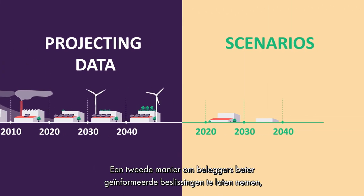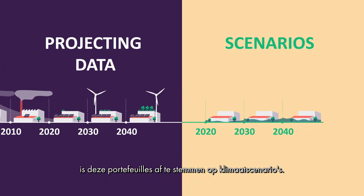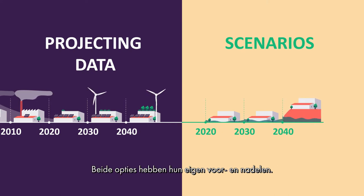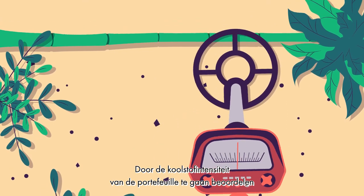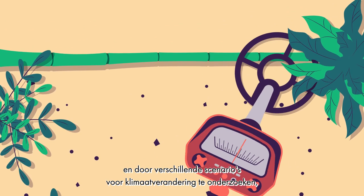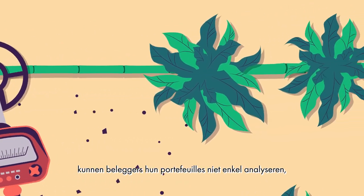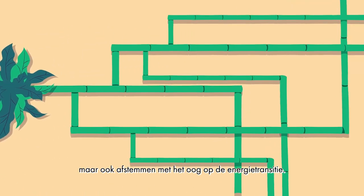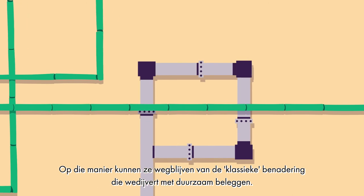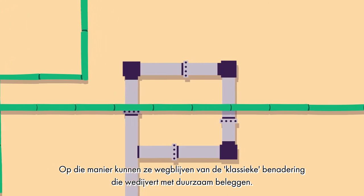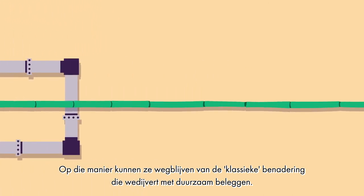A second way to help investors make better informed investment decisions can be to align those portfolios with climate change scenarios. Both options present their own upsides and downsides. By assessing the carbon intensity of the portfolio and by exploring different climate change scenarios, investors can not only analyze but also tilt their portfolios to support the energy transition and steer away from the business-as-usual approach that squares off against sustainable investing.